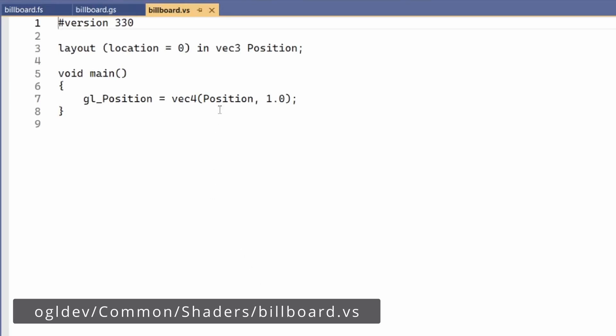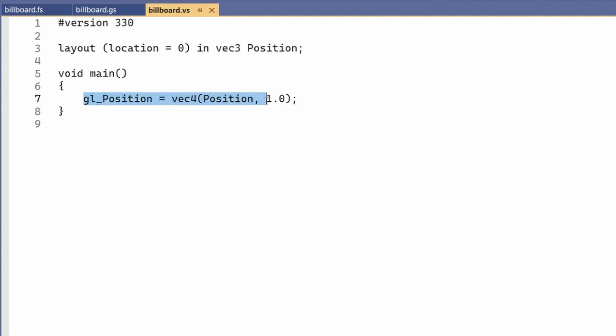The vertex shader is as short as it can be. It simply passes along the position of the point without any changes.